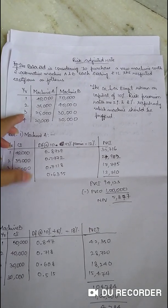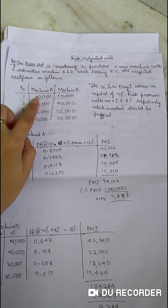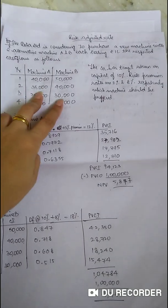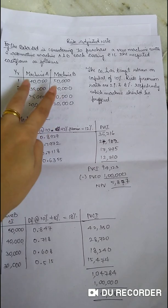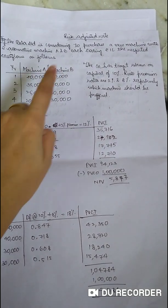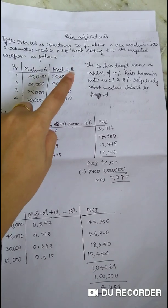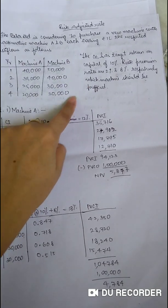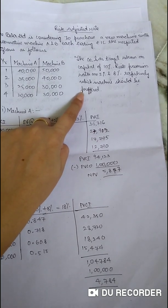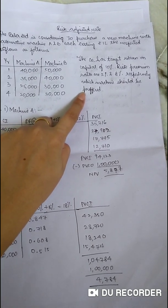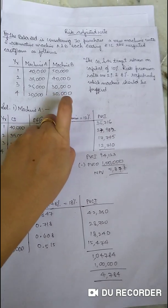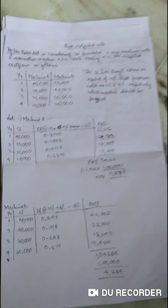Here you have the beta limited is considering to purchase a new machinery with two alternatives: machine A and machine B, each costing rupees 1 lakh. The respective cash flows are as follows. Now what is the investment? Investment is 1 lakh rupee and you have two machineries, so the investor has to make a choice between these two. For both of them the investment amount is 1 lakh rupee. Here an additional information is given: the company has target return on capital of 10%, risk premium are 2% and 8% respectively.